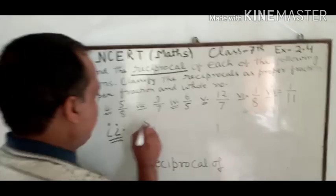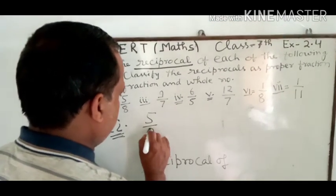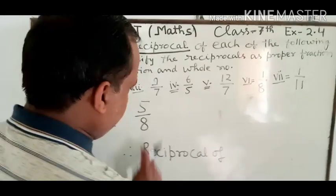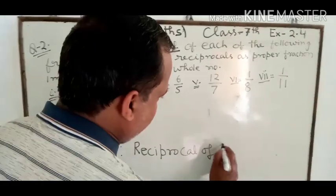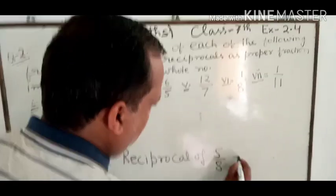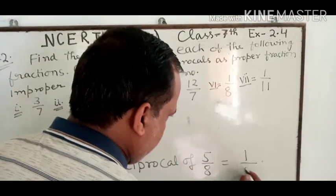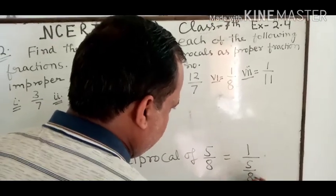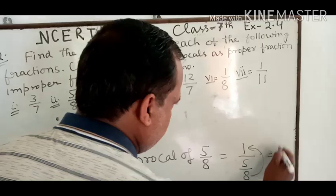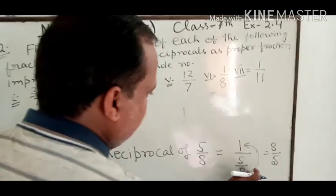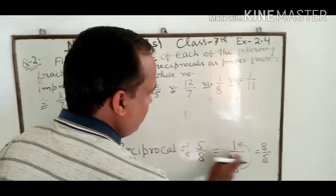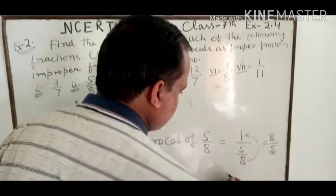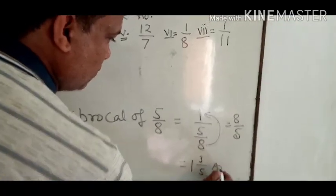Second part: 5 upon 8. Reciprocal of 5/8 equals 1 upon (5 upon 8). अब यह 8 ऊपर shift कर गया, so this is 8 upon 5. Converting to a mixed fraction: 1 whole 3 upon 5. This is your answer for part two.